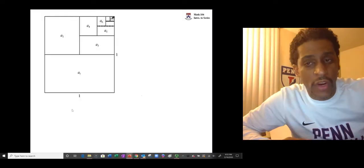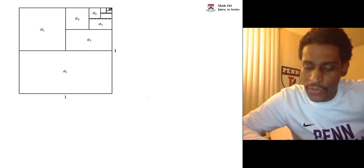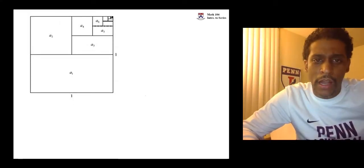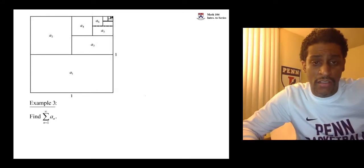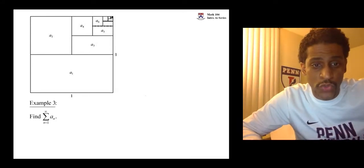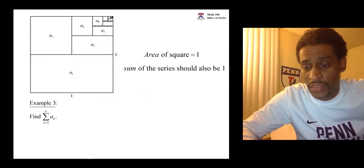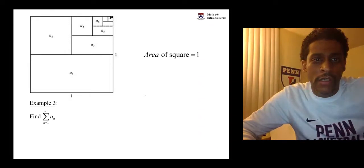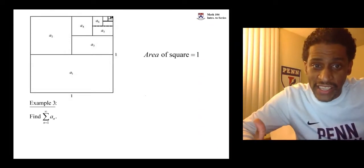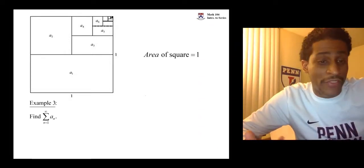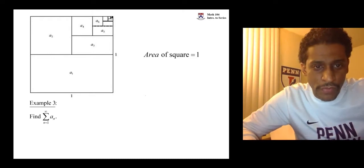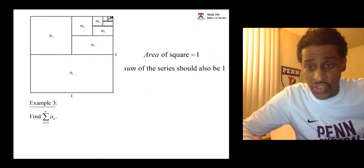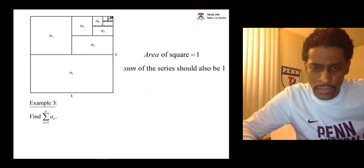In this video we look at two more examples of geometric series — think of these more as applications. What we're looking at is a square whose side length is one, so it has an area of one. But what we're looking at is an infinite series, and when we add up this infinite series we should also get one. Let's see how that works.